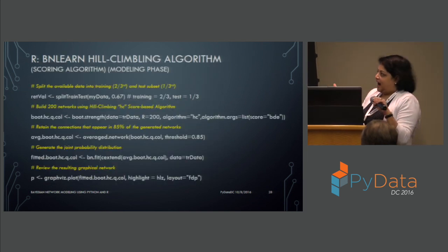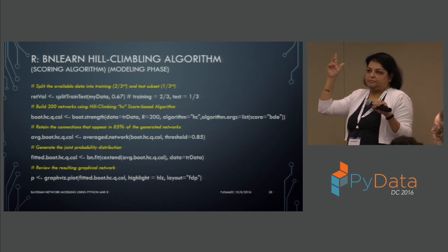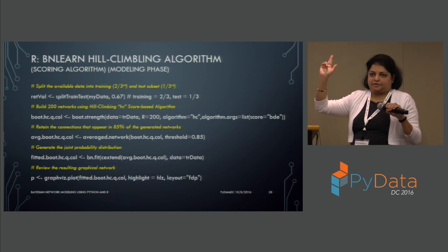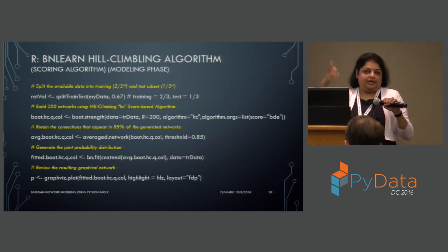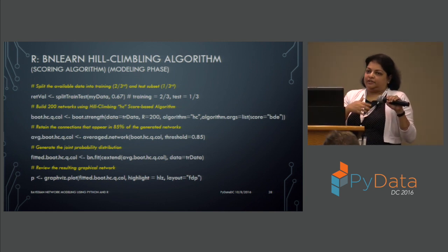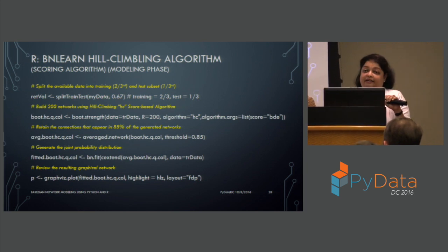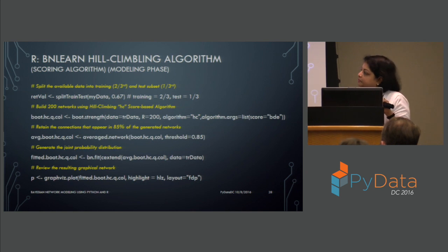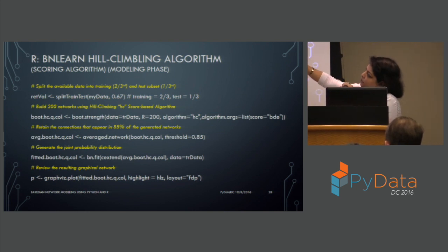My favorite R package is BNLearn — Bayesian Network Learn — which has implemented most constraint-based and score-based algorithms. You can run your code through each of them multiple times to see which performs better on your data, since performance depends on the characteristics of your data. In this example, the data is split into training and test sets, and then 200 networks are built using hill climbing, which is one of the score-based algorithms.